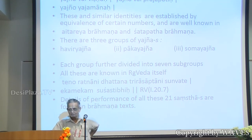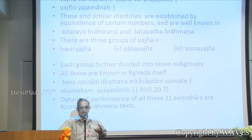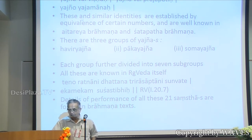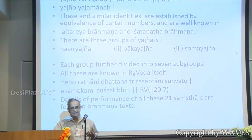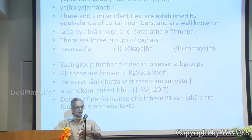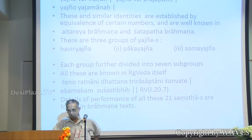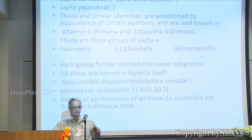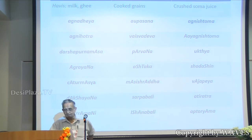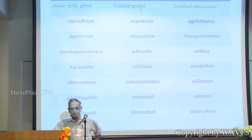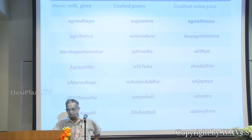There are three groups of Yajnas: Havir Yajna, Pak Yajna, and Soma Yajna, depending upon the Havis — the offering that is done. Each of these is divided into seven groups, so there are 21 groups of samstas called Yajna samstas. These are all known in Rig Veda itself. So some people say Yajna developed later, but even in Rig Veda itself they know all these 21 samstas. It refers to the 27 — Trira sapthani, three times seven. In Havir Yajna, the primary offering is milk and ghee; in Pak Yajna, it is cooked grains; and in Soma Yajna, it is Soma juice.